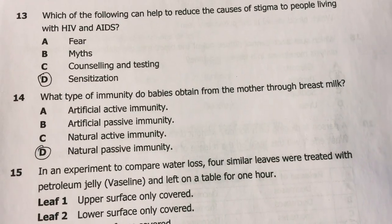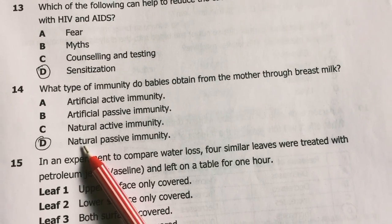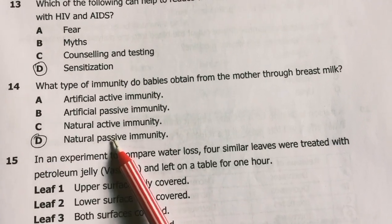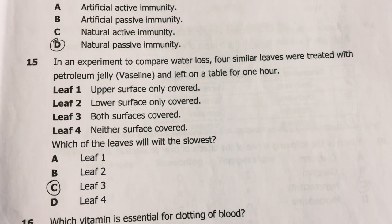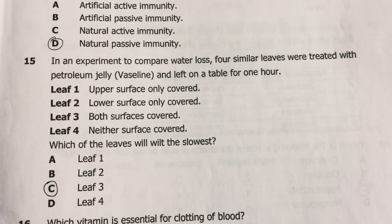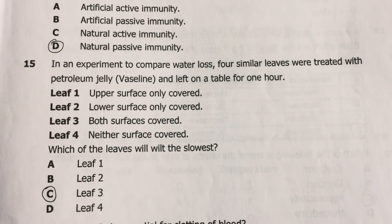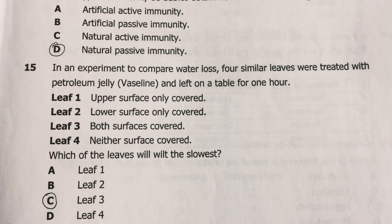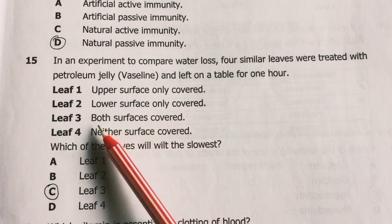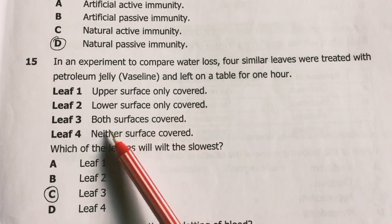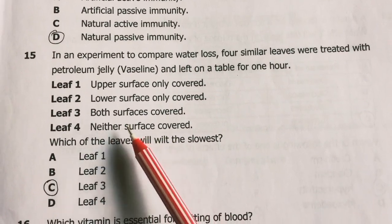Question 14: What type of immunity do babies obtain from the mother through breast milk? Natural passive immunity — natural because it comes about naturally without our influence, and passive because the baby doesn't take part in generating it. Question 15: In an experiment comparing water loss, four similar leaves were treated with petroleum jelly — leaf one had the upper surface only covered, leaf two the lower surface only, leaf three both surfaces, and leaf four neither surface.